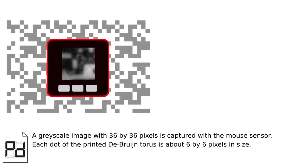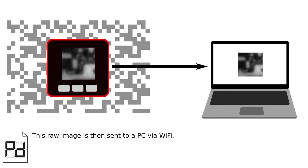A grayscale image with 36x36 pixels is captured with the mouse sensor. Each dot of the printed De Bruijn torus is about 6x6 pixels in size. This raw image is then sent to a PC via Wi-Fi.